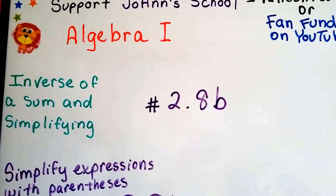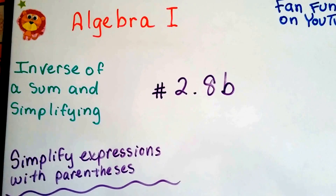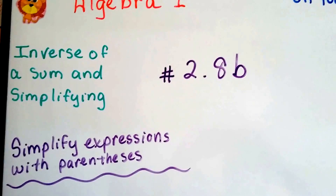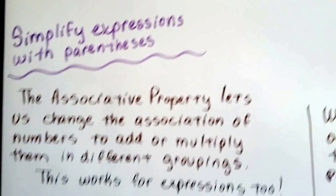Algebra 1, number 2.8b. We're talking about the inverse of a sum and simplifying — simplifying expressions with parentheses.